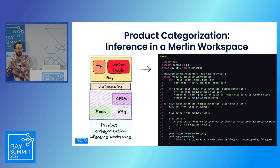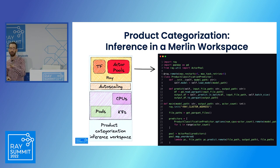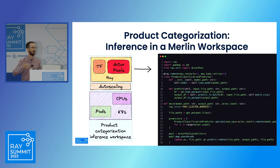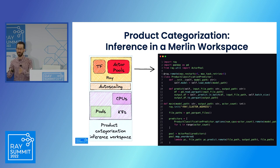In a different step of the ML workflow, we perform inference for product categorization. In this situation, we no longer need GPUs. However, we leverage a different part of Ray — Ray actor pools — which allows us to send different partitions through the trained model in order to return inference. In our specific case we're using actor pools, but this could also be done using Dask or Ray datasets.